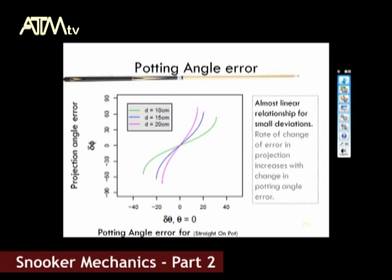By plotting a graph of this equation, we can see the graphical relationship, which looks very similar to our previous graph. Once again, for small potting angle errors there is a linear relationship with the projection angle error. However, this increases at an increasing rate as the potting angle error becomes greater. This means the more mistakes we make, the worse the outcome is.